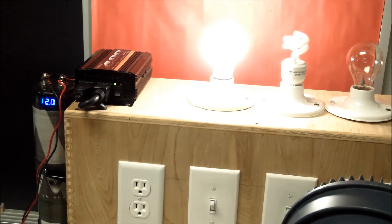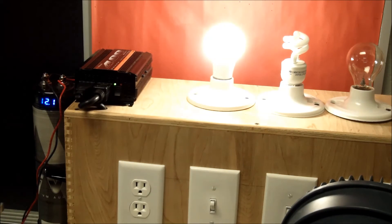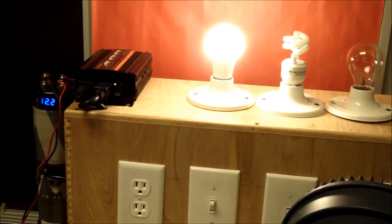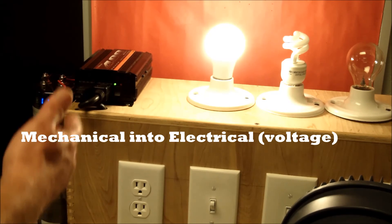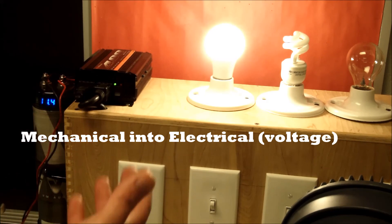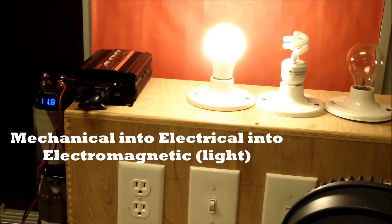And now I'm powering that light bulb, which is only a 9 watt light bulb. So this conversion right now is mechanical energy of me pedaling into electrical energy. Then as it goes to the light, the light energy is electromagnetic energy.